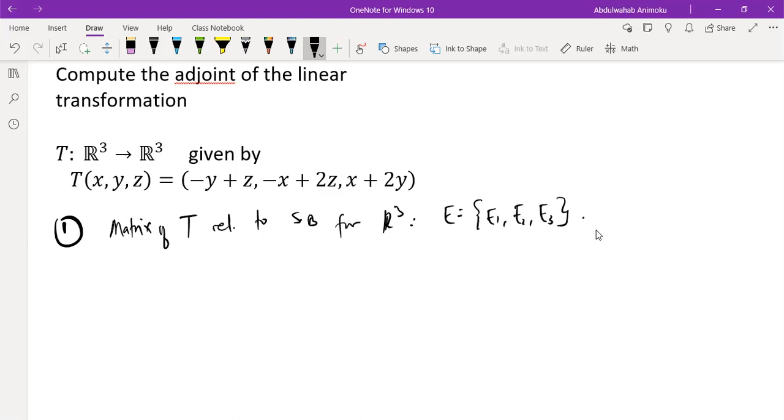So that means we need to calculate T of (1, 0, 0), T of (0, 1, 0), and T of (0, 0, 1).